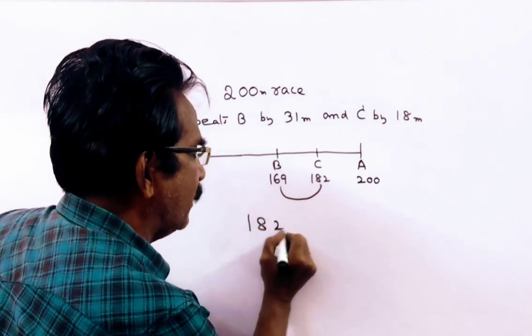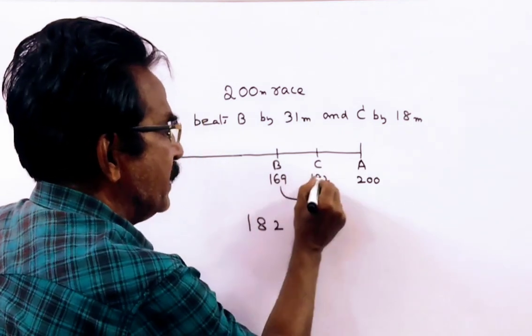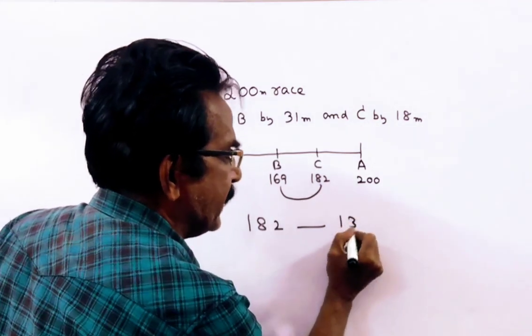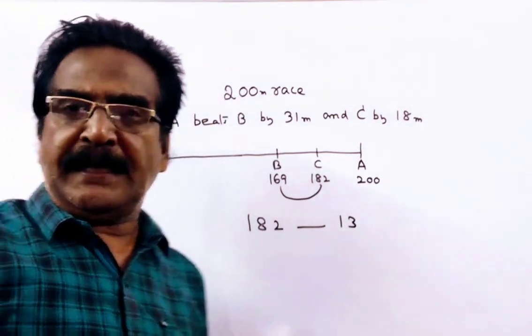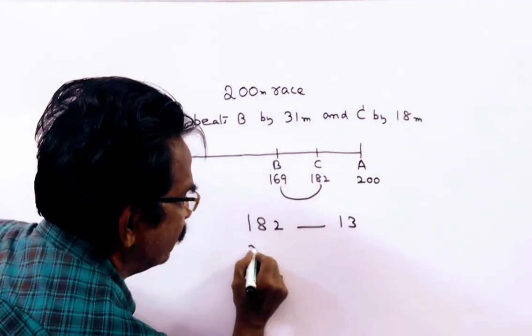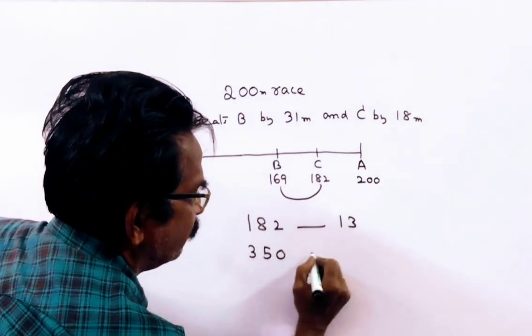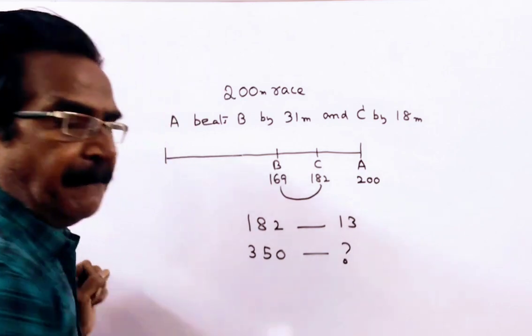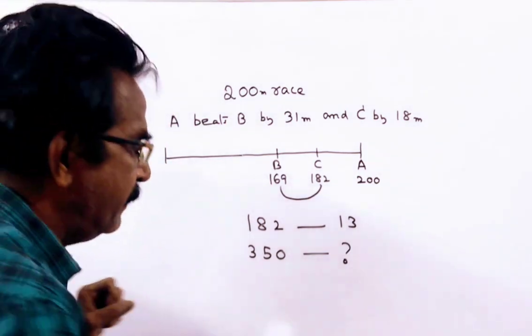So, in a race of 182 meters, C beats B by 13 meters, 182 minus 169. So here the question is, in a race of 350 meters, C beats B by how many meters?